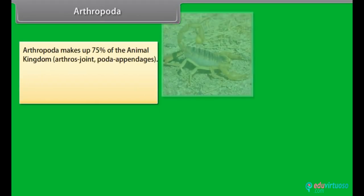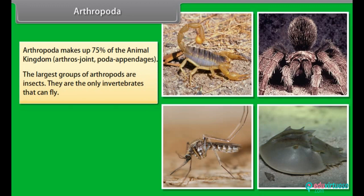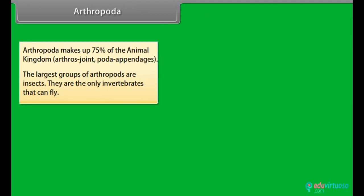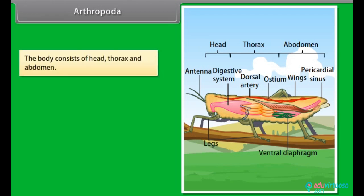Arthropoda makes up 75% of the animal kingdom. Arthros means joint; poda means appendages. The largest groups of arthropods are insects — they are the only invertebrates that can fly. They have organ system level of organization. They are bilaterally symmetrical, triploblastic, segmented and coelomates. The body consists of head, thorax and abdomen.